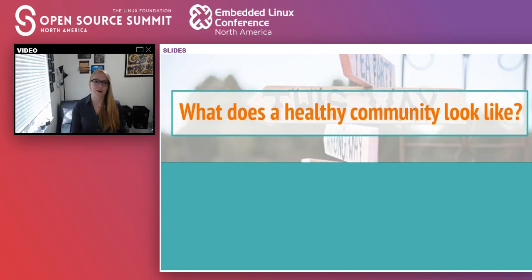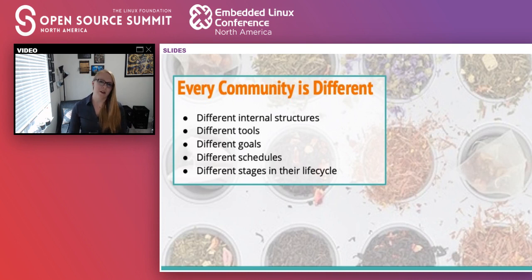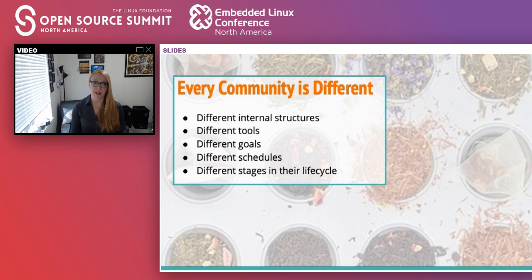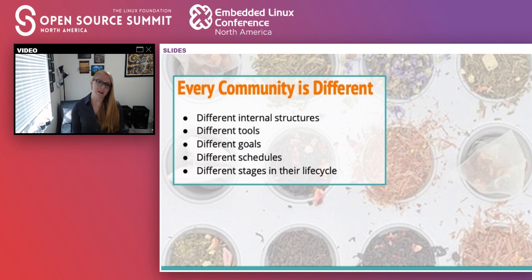What does a healthy community look like? This is a really difficult question, because as we've established, it's impossible to compare one community to another — you're comparing apples to oranges. You have to think about all of the individual things that are different from each community. There are different internal structures, how the code is set up, multiple repositories, different tools. For example, the OpenStack community uses Gerrit instead of GitHub, and Zuul instead of Prow for testing changes. There are different goals from project to project, based on where they are in their life cycle — they could be feature-complete and just maintaining, or still getting a lot of new interest.